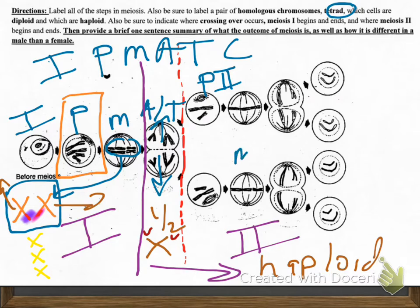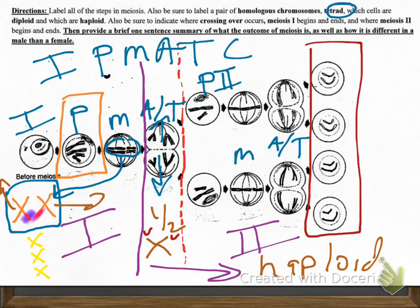And again we have metaphase. And then again here we have anaphase and telophase again. Until we end up with four genetically unique cells.